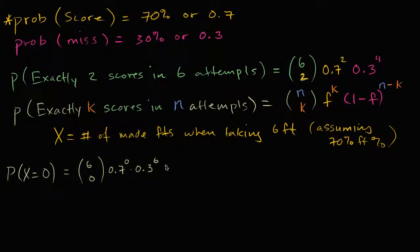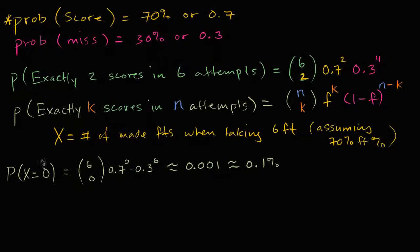If we round our percentages to the nearest tenth — rounding to the nearest thousandth — this gives you approximately 0.1% chance of missing all of them. So roughly one in a thousand chance of missing all six free throws.